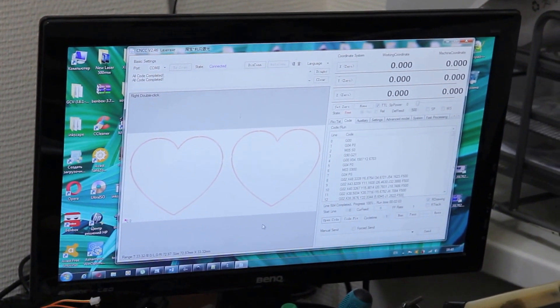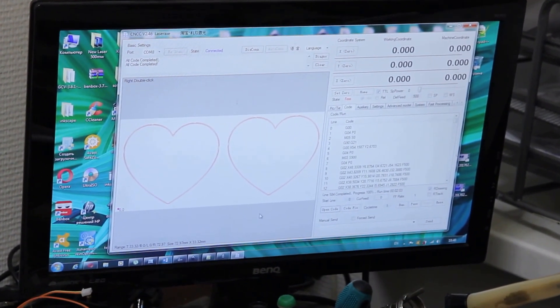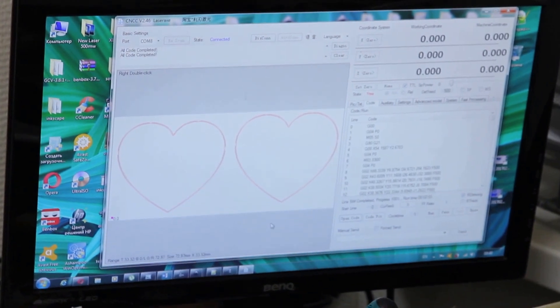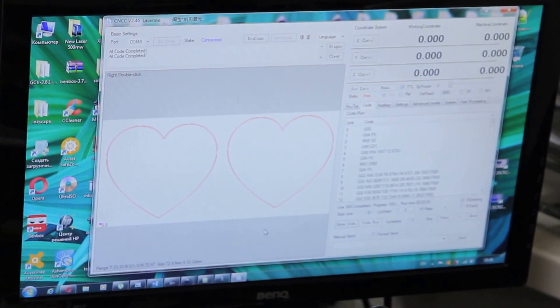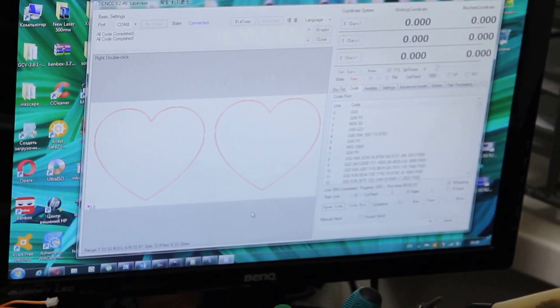As you can see, we already uploaded two images of hearts in our CNC program and now we'll show you how it's working. You can see we take the piece of this foil and we're going to run it.